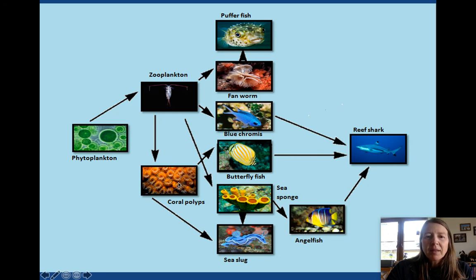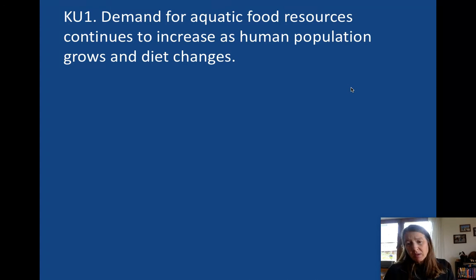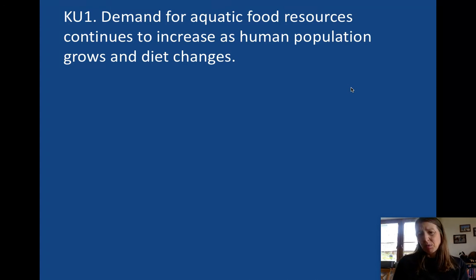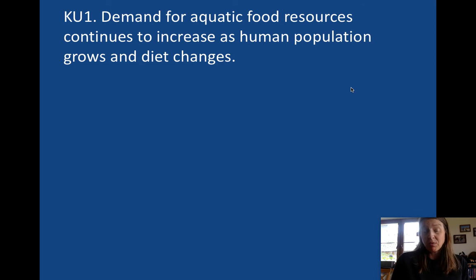There are plenty of different organisms that feed off each of those levels. The importance of what we're focusing on today is aquatic food production — the energy from the sun flows through phytoplankton, moves up the chain, and eventually we can produce food from all of this in a couple of different ways.